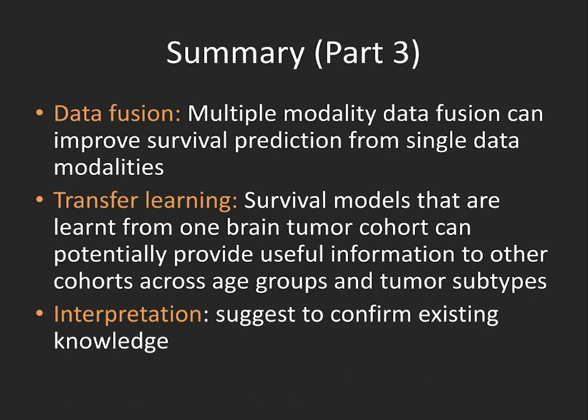To summarize this part, these are some preliminary results specifically on adult and pediatric brain tumors to develop models that improve survival prediction across modalities. We also tested transfer learning settings, and there is still work to be done to improve these models and transfer knowledge from adults to pediatric and rare pediatric brain tumors. We also did some very preliminary work in interpretation of these models.